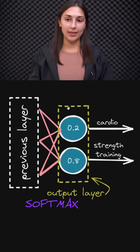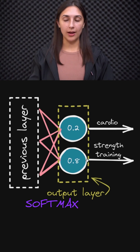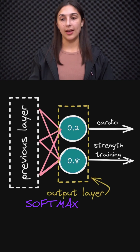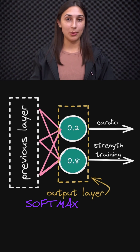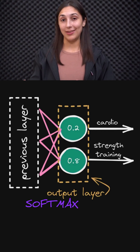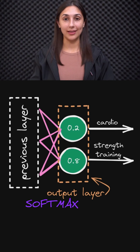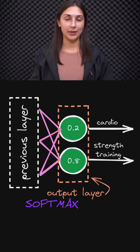In this example, we have a 0.2 or 20% probability assigned to the cardio class, whereas we have an 80% probability assigned to the strength training class by the network. So this probability distribution that we receive as output from neural networks during classification tasks is due to the softmax function being applied to the output layer.